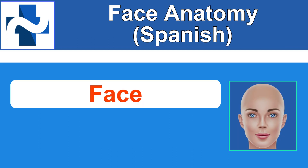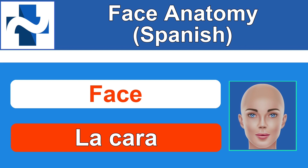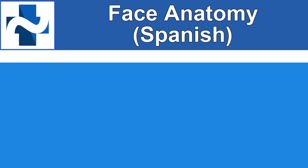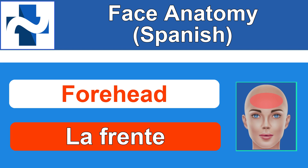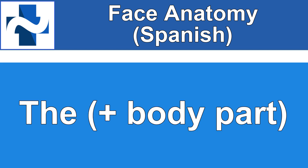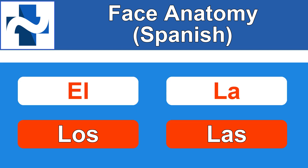The first one is face. How do you say face in Spanish? La cara. La cara. And the reason I'm saying the face and the forehead is because most of the time in Spanish, if you talk about any body parts — not just on the face, but any body parts — you usually say 'the' before the body part. So it's good to learn the correct article, whether it's el, la, los, or las.